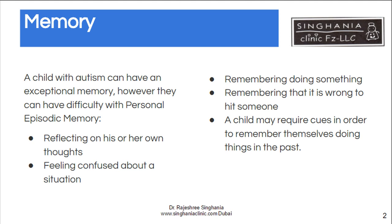It's difficult for them to reflect on their own thoughts, and thus they feel confused about the situation. They may not remember what they have done wrong or why they hit a child, and it may not be that they are lying — it's just that they don't remember having done it.